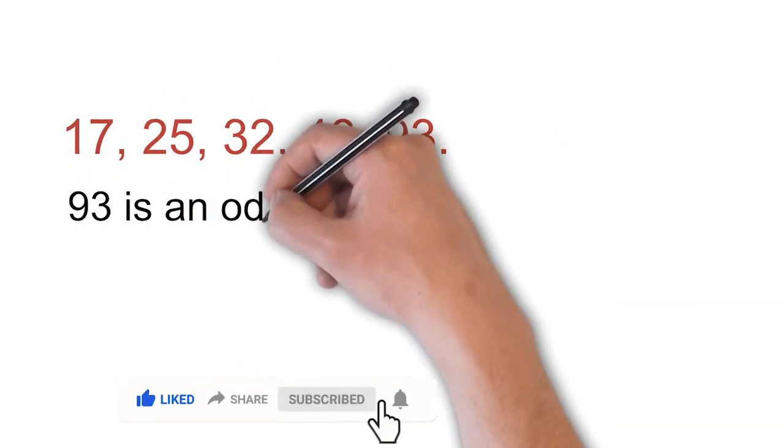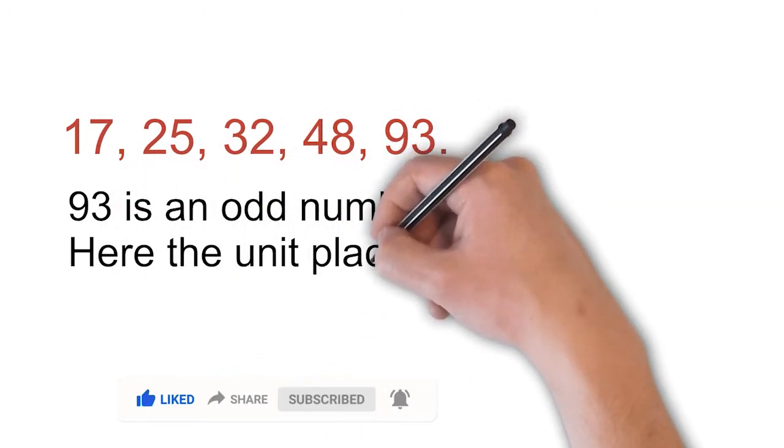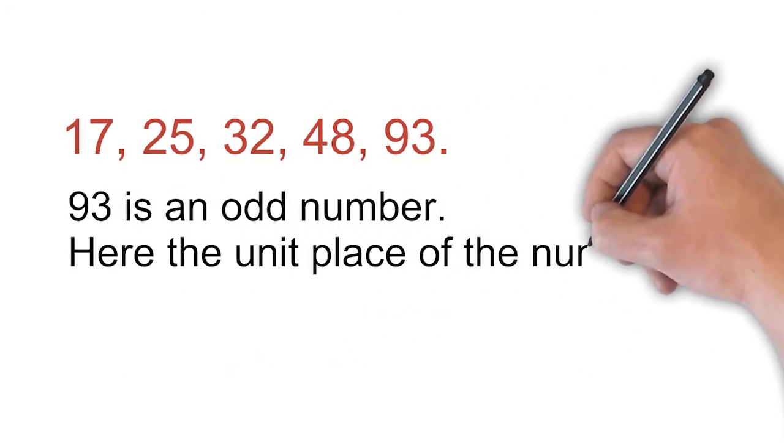Next, 93 is an odd number. Here, the unit place of the number is 3.